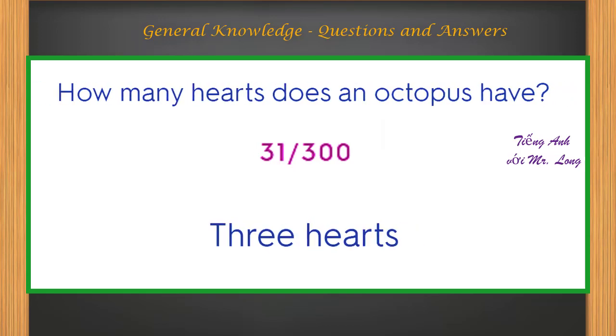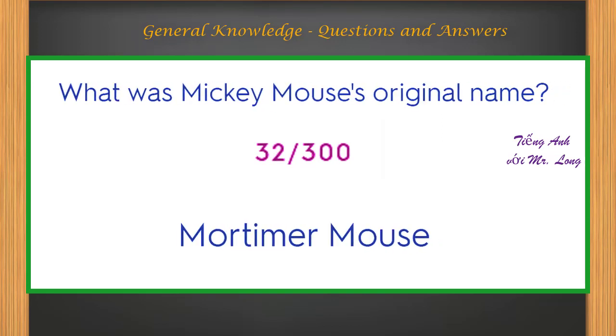How many hearts does an octopus have? Three hearts. What was Mickey Mouse's original name? Mortimer Mouse.